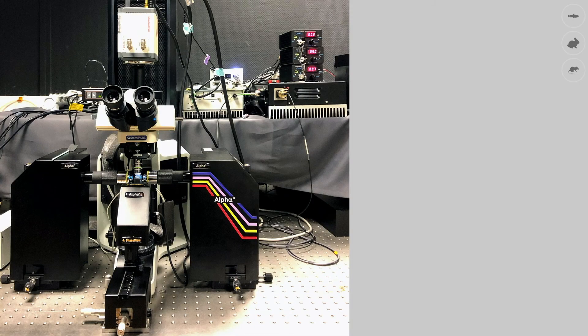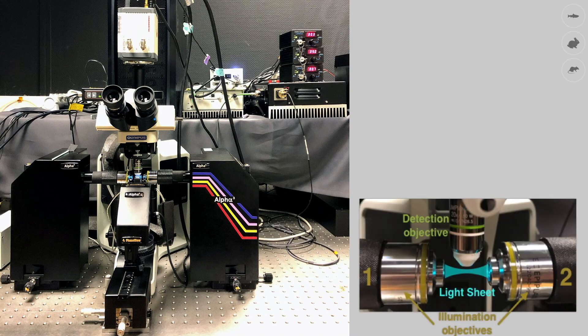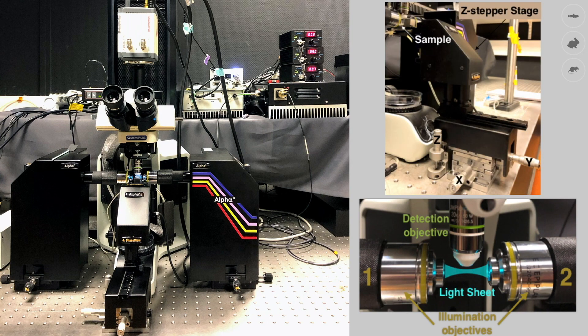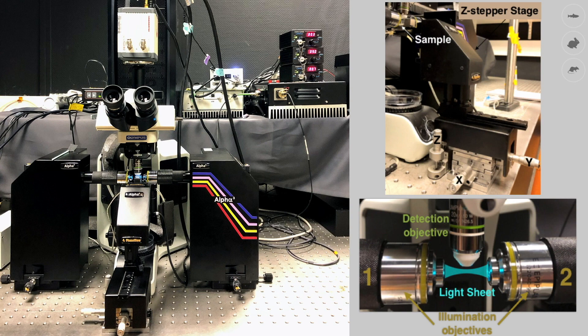This is one type of light sheet microscope available in an imaging facility. The main components of this microscope are two illumination objectives and one objective for detection, a stage for xy positioning and z sectioning, lasers to illuminate the sample with four different wavelengths, and an ultrafast and sensitive camera for signal detection.